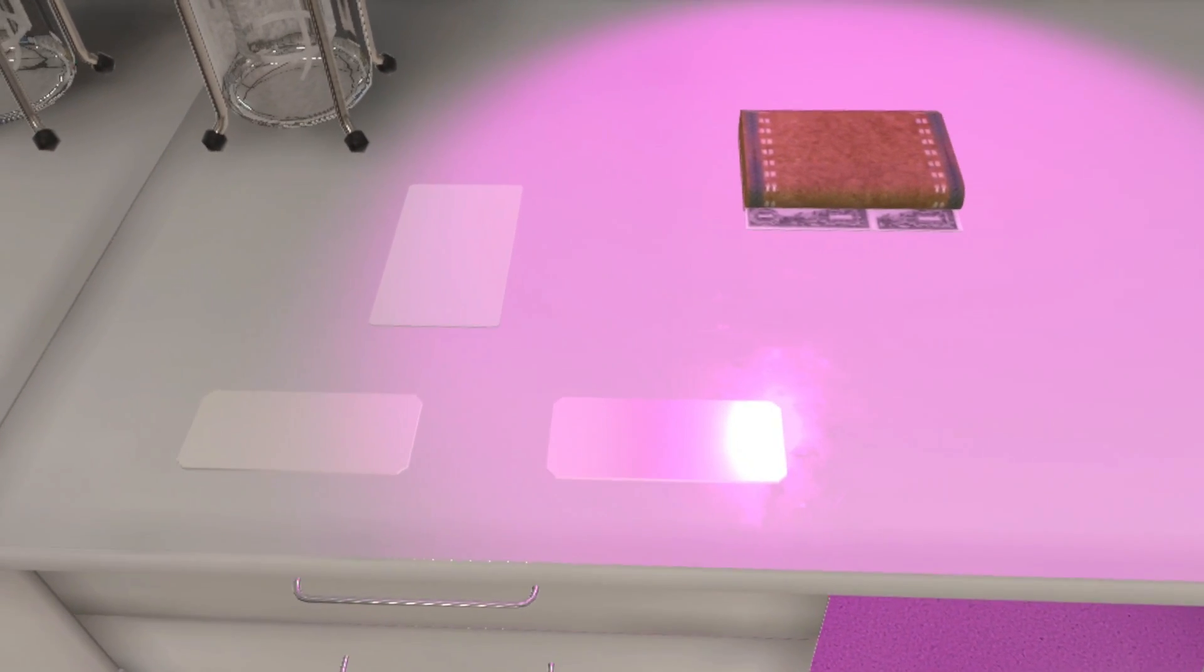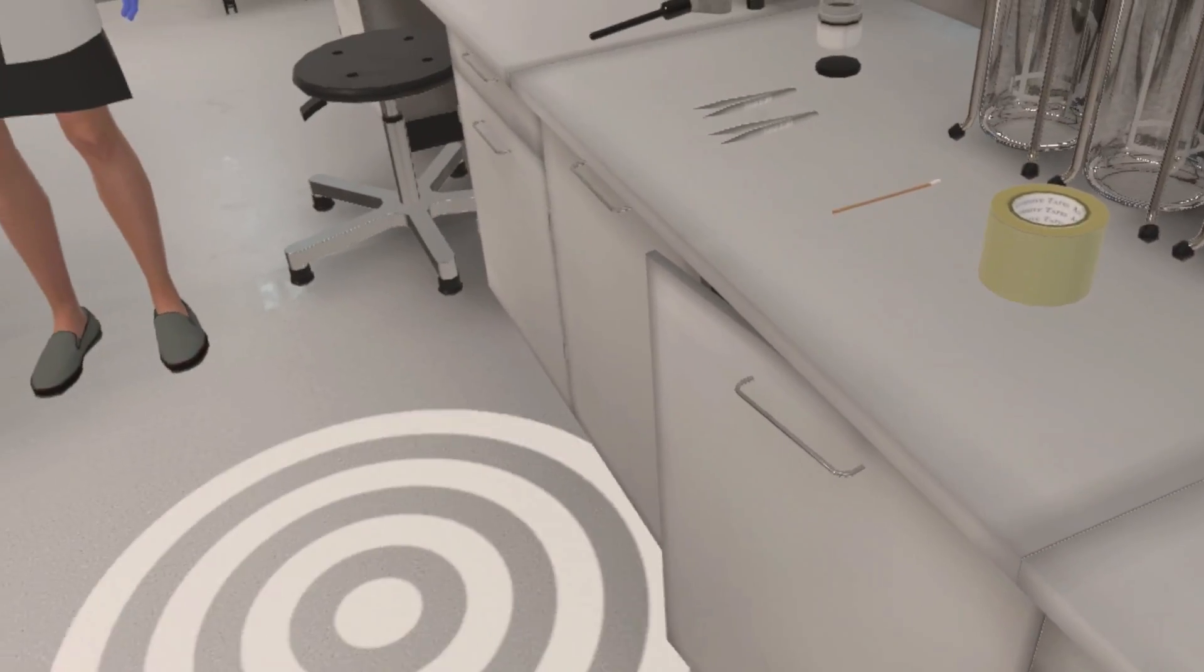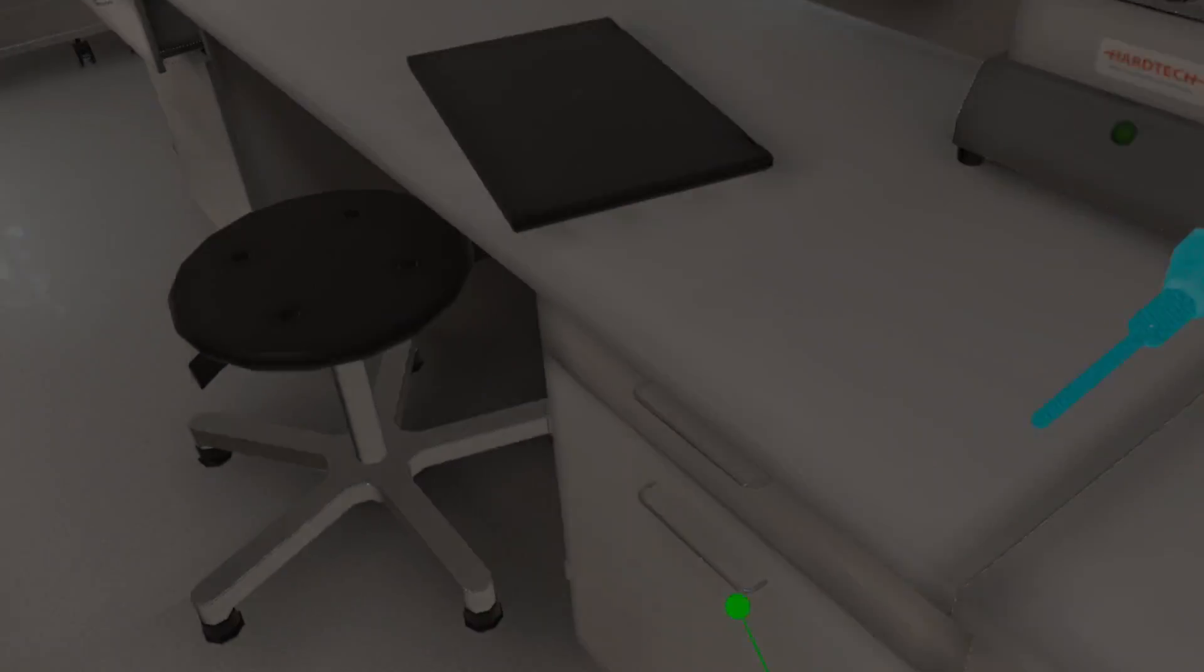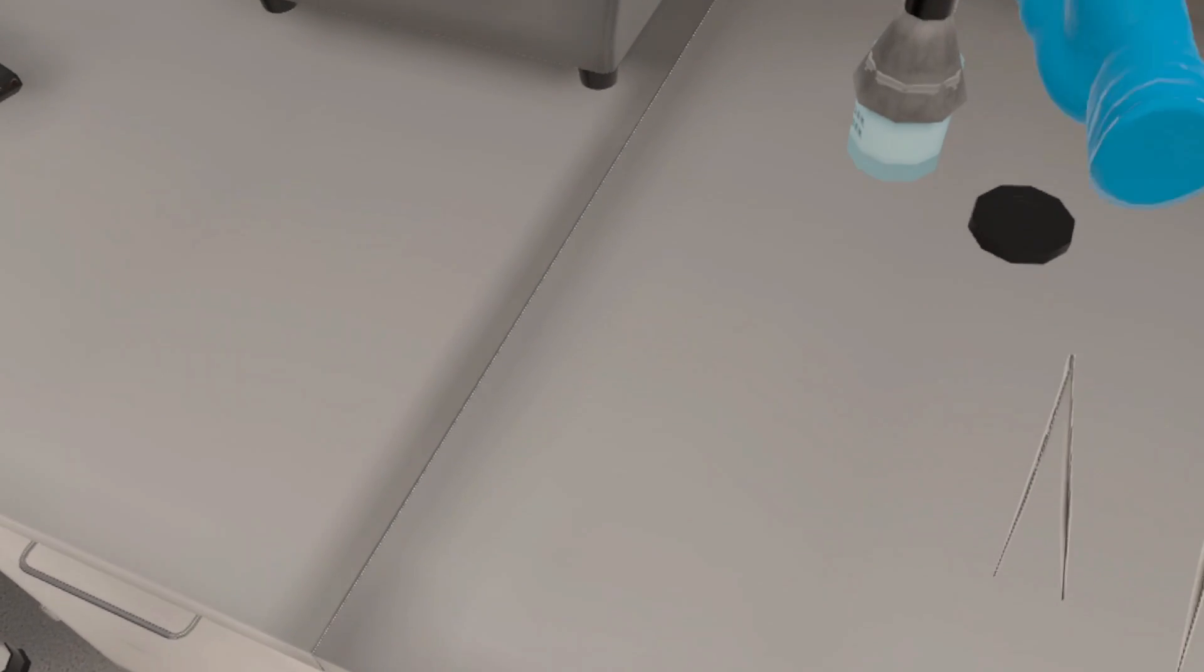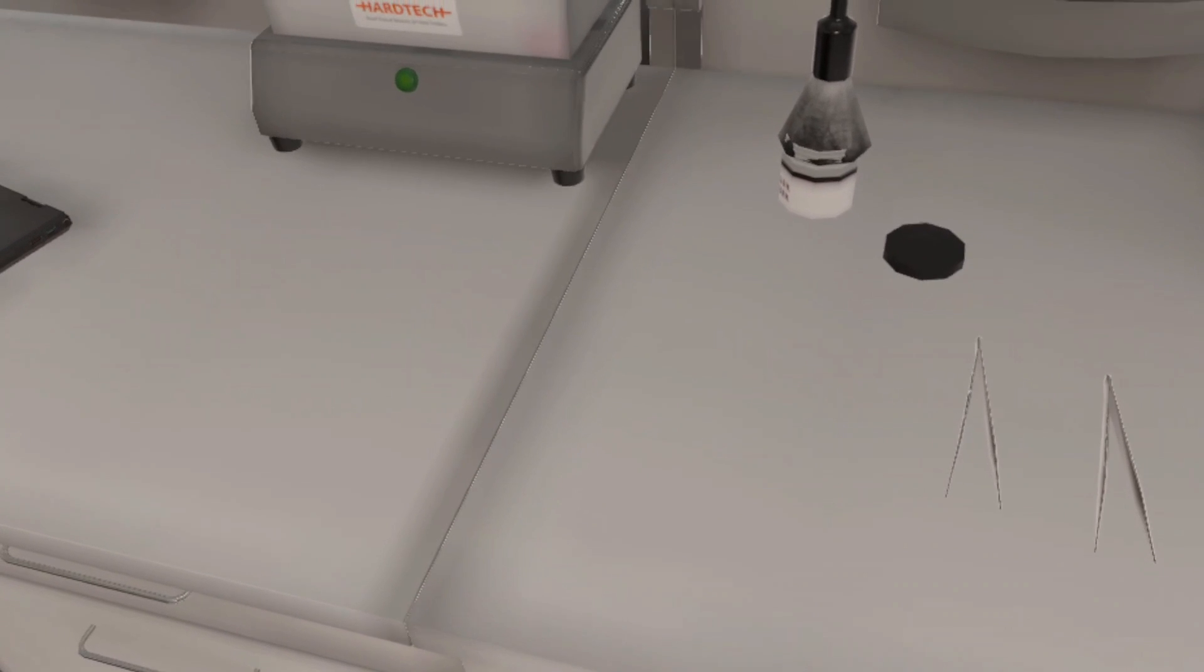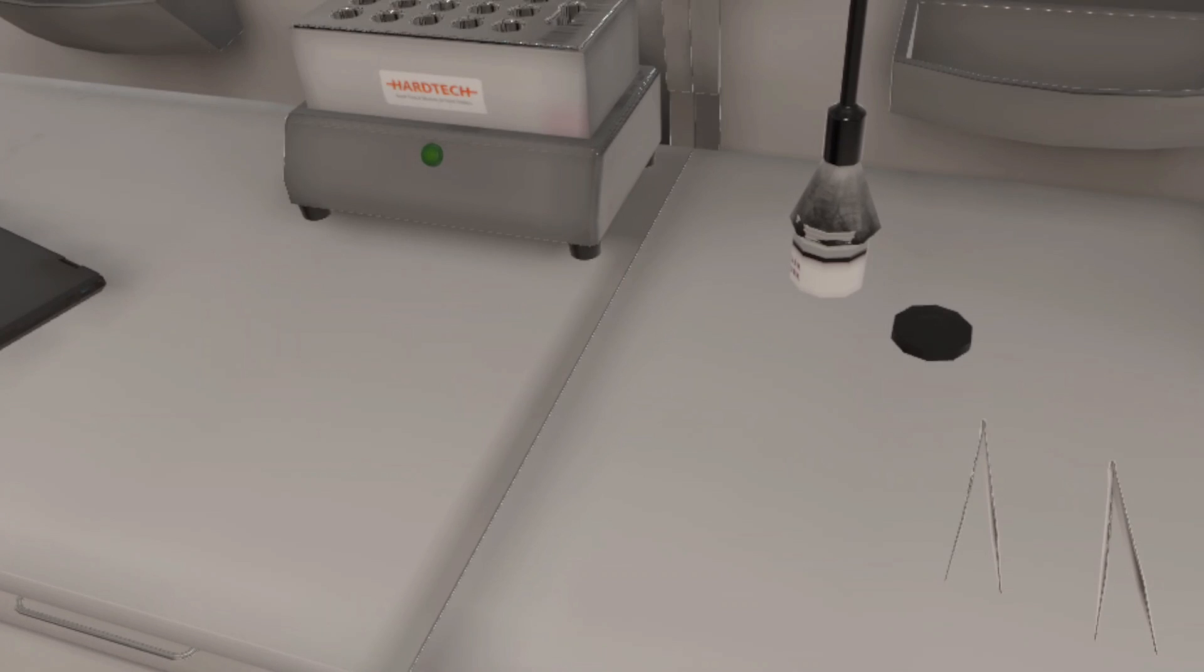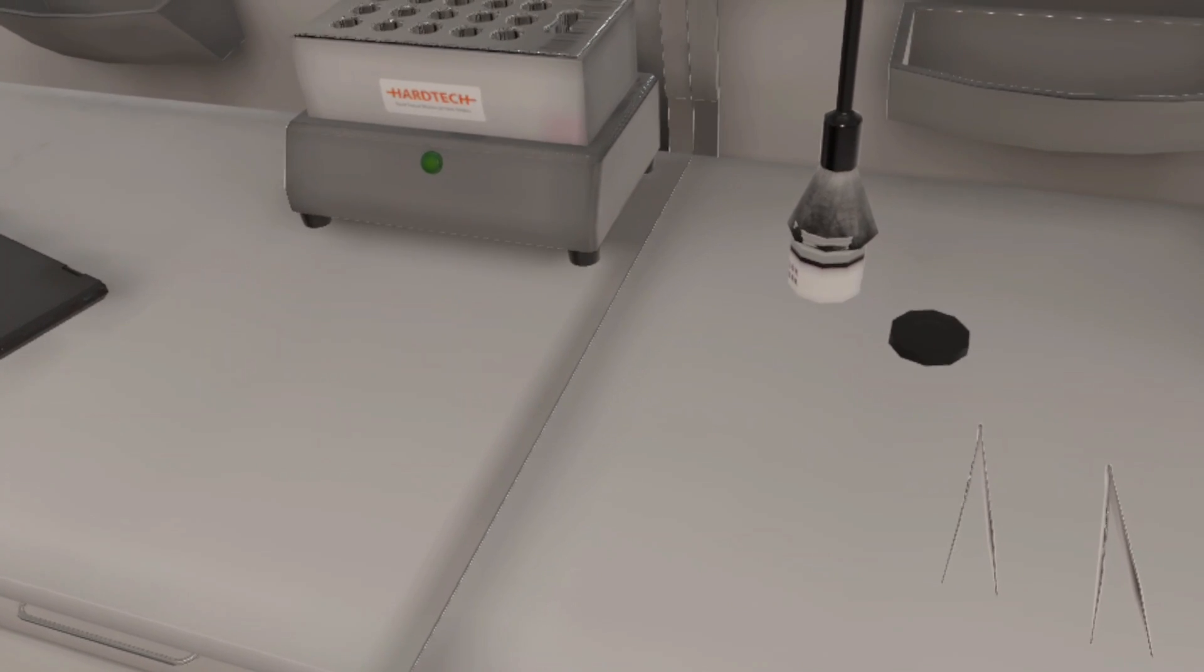Take the brush and apply it on the fingerprint powder. The brush should now be swept over the wallet to reveal any prints. Once done, snap the brush back on the highlighted zone.